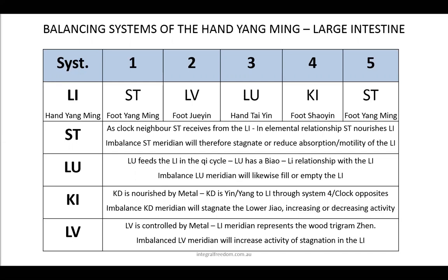The lung feeds the large intestine in the Qi cycle, and the fact that the lung channel begins in the stomach should not be ignored. The lung also has an ability to balance the urinary bladder. As the urinary bladder represents the posterior aspect of the body, you will start to find out how important it is for the back energy to be free and flexible if the throat is going to be okay. Basically, if the upper back is blocked, then the throat is also likely to get blocked.